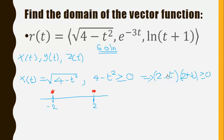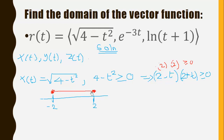Testing the region between the boundaries — picking t = 0 — we get (2 minus 0)(2 plus 0) = 2 times 2 = 4, which is greater than or equal to 0. So the solution set satisfies the inequality in that region. The domain of x(t) is therefore negative 2 less than or equal to t, less than or equal to 2.